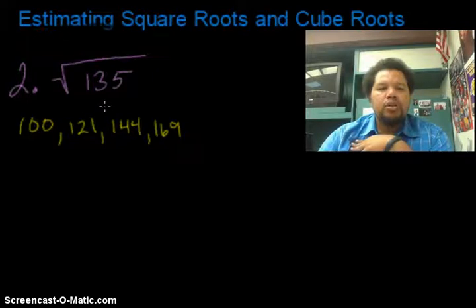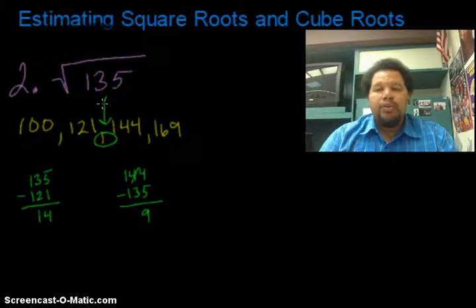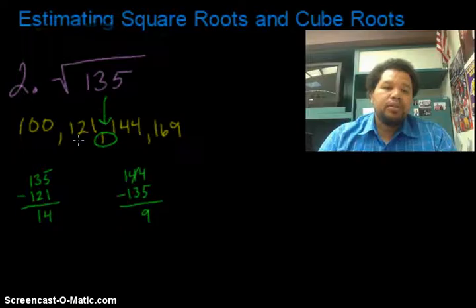So I have to think to myself, which two integers or perfect squares is 135 in between? And it's in between here. This is where 135 will be. My next thought is to figure out which perfect square 135 is closer to. Is it closer to 121 or is it closer to 144?